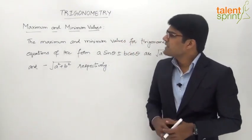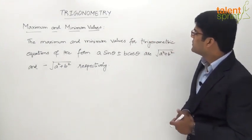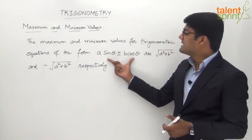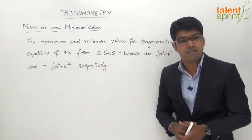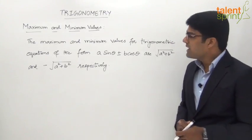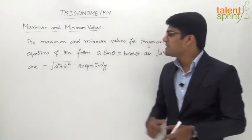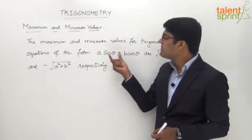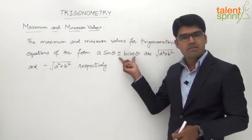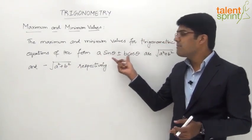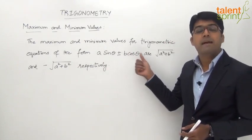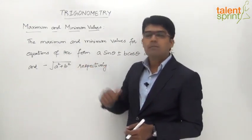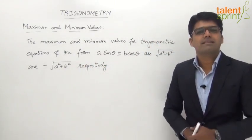The maximum and minimum values for trigonometric equations of the form a·sinθ ± b·cosθ are √(a² + b²) and −√(a² + b²) respectively. So, if we have the trigonometric equation of the form a·sinθ + b·cosθ or a·sinθ − b·cosθ, then the maximum value will be √(a² + b²) and the minimum value will be −√(a² + b²).